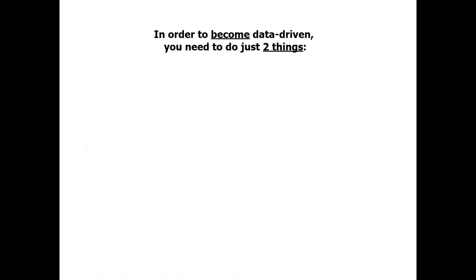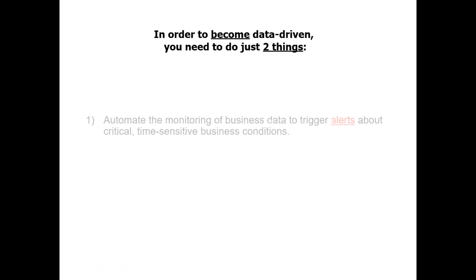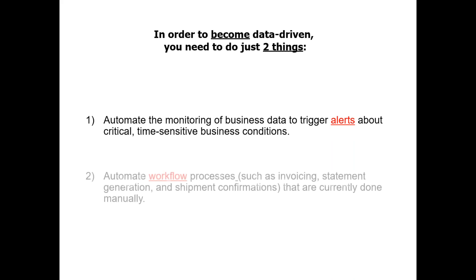When we talk about being data-driven, you really need to do just two things. First, you need to automate the process whereby you're monitoring your Sage ERP business data to automatically trigger alerts and workflow based upon conditions, activities, and thresholds being met. Secondly, you need to take processes like invoicing and statement generation that are currently done manually and automate them. These two items collectively enable you to achieve that data-driven approach.